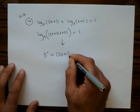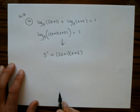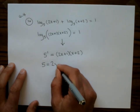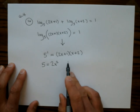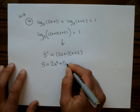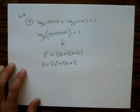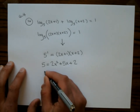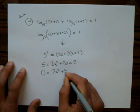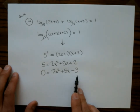Expanding the right side using FOIL: 5 equals 2x squared plus 5x plus 2. Subtracting 5 from both sides gives 2x squared plus 5x minus 3 equals 0.